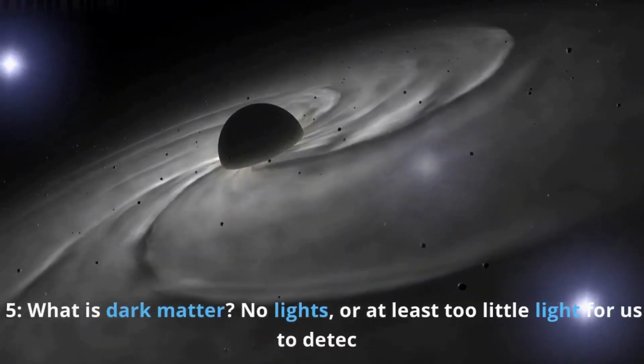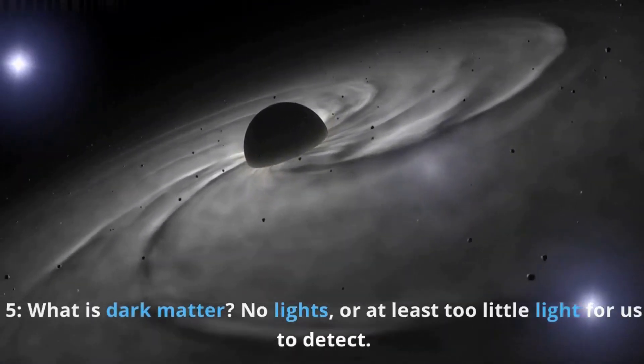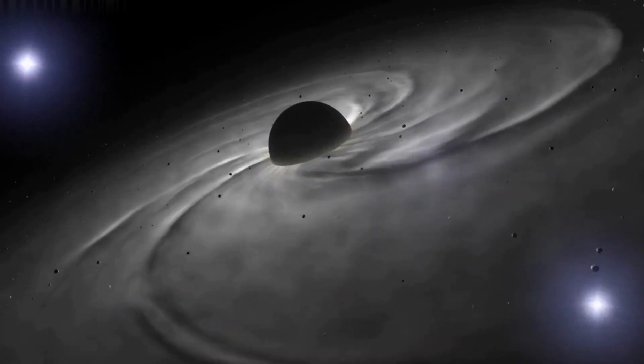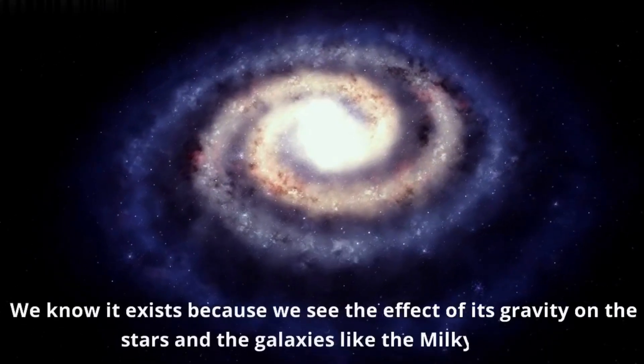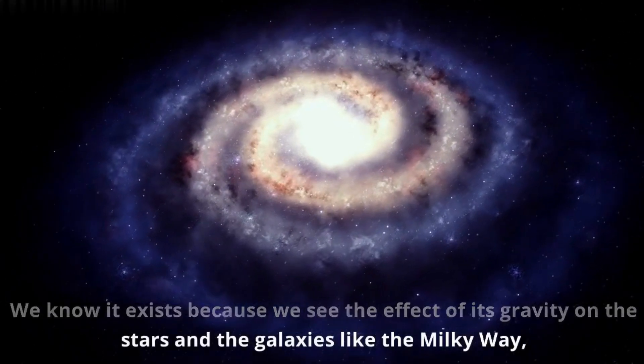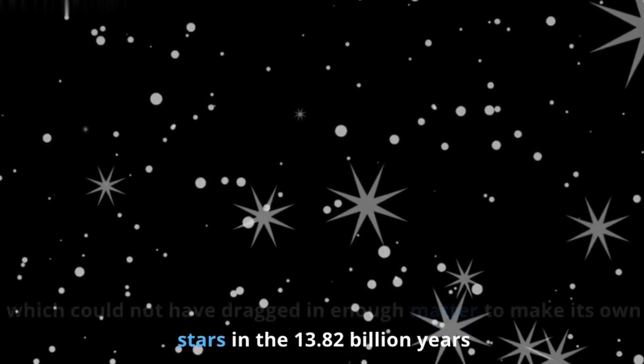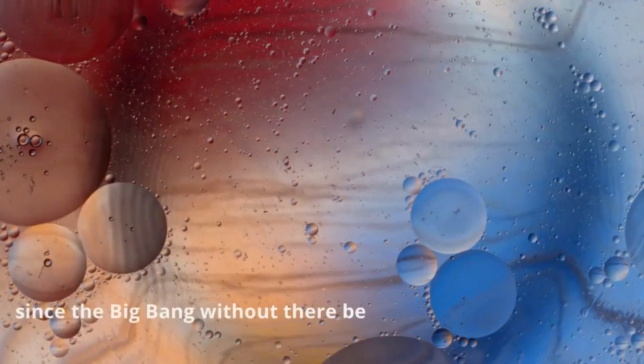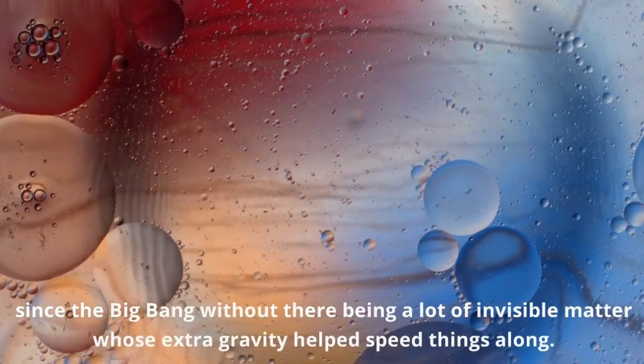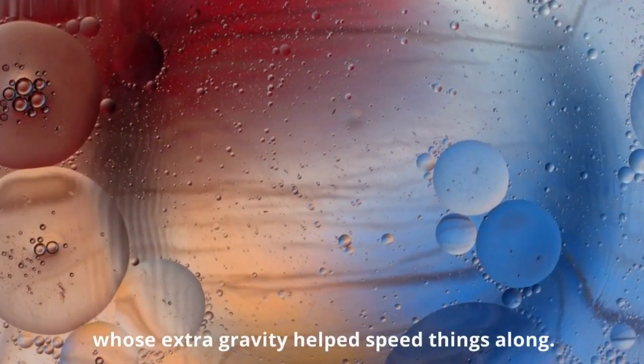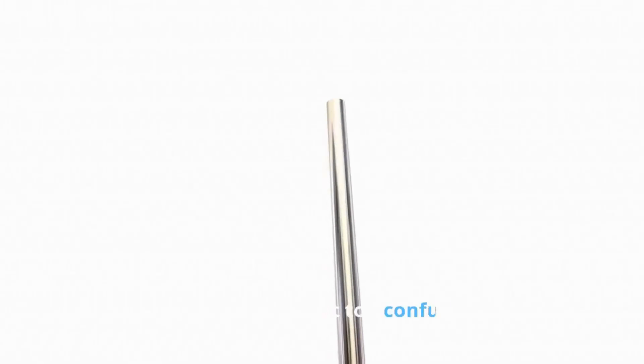Number 5. What is dark matter? No lights, or at least too little light for us to detect. We know it exists because we see the effect of its gravity on the stars and the galaxies like the Milky Way, which could not have dragged in enough matter to make its own stars in the 13.82 billion years since the Big Bang without there being a lot of invisible matter whose extra gravity helped speed things along. I hope that wasn't too confusing.